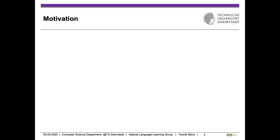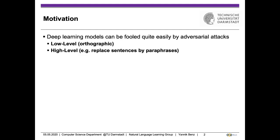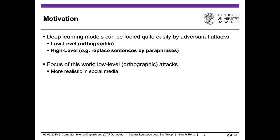I want to give you a brief introduction to the topic and explain why it is necessary to put effort into it. As stated in different literature, deep learning models can be fooled quite easily by adversarial attacks — first by low-level attacks, or so-called autographic attacks, like character swappings or replacement of visually similar characters, or by high-level attacks like replacing one sentence by a paraphrase. We prioritize low-level attacks because they are easier to apply. The attacker needs no knowledge about grammar and therefore they occur more often, e.g. in social media.